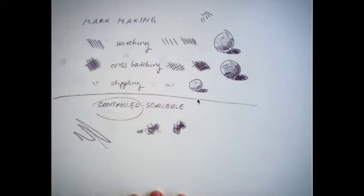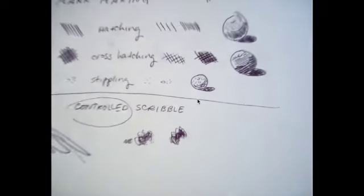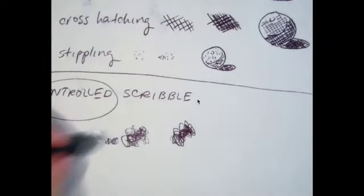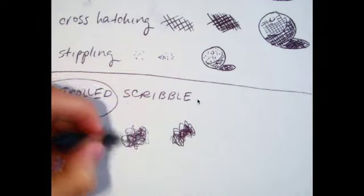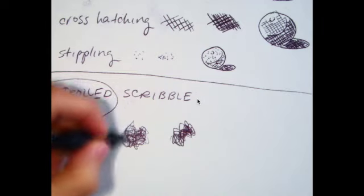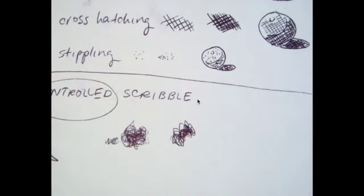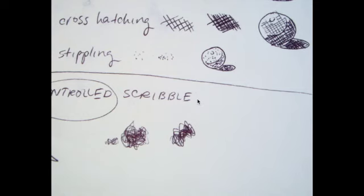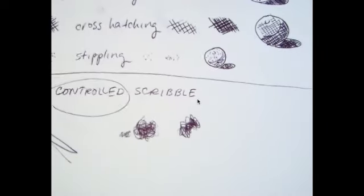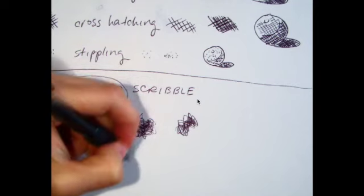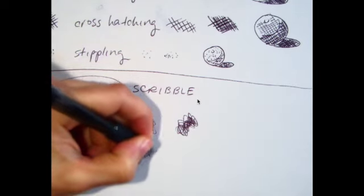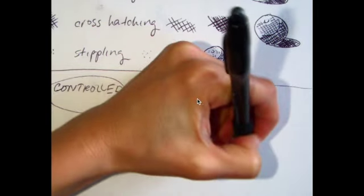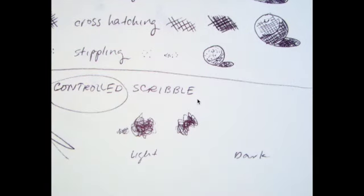But I think what's distinct about scribble is that when it's all together and that it's done well, it looks really like a pretty smooth value. So let's think about if we had a six part value scale, so we had our lightest value over here and our darkest value over here.